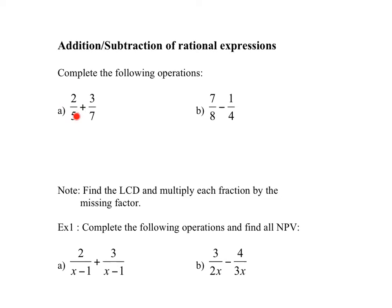What you need to add fractions together is a common denominator. In our case, that common denominator would be 35. We're going to multiply the first fraction by the factor we're missing — the factor of 7 — so we multiply by 7 over 7.